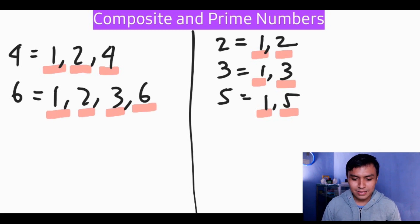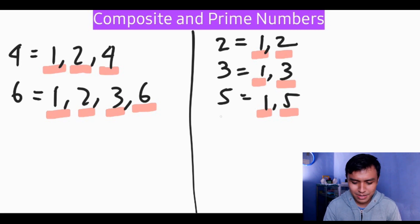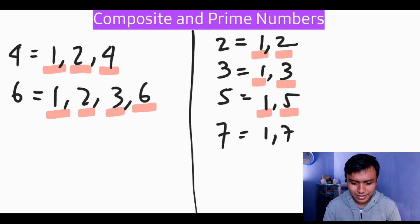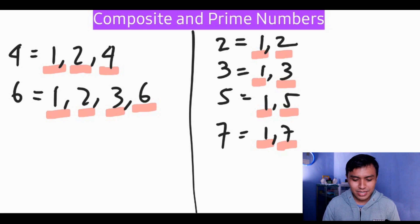Next is seven. Seven has exactly two factors: one and seven, so we put it in the prime numbers column and underline it.